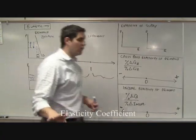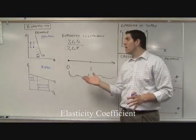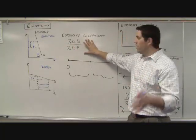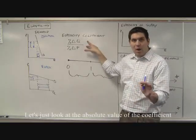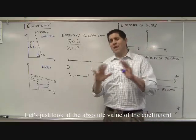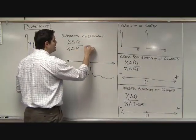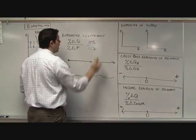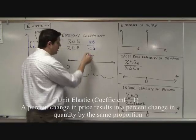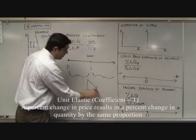Now there's this thing called the elasticity coefficient. It's the percent change in quantity divided by the percent change in price, and it pops out a number. That number tells you if a product's demand is elastic or inelastic. This will pop out a negative number because of the inverse relationship between quantity and price — just take the absolute value. If the change in price was 10% and that led to a 10% change in quantity, that pops out a one — that's called unit elastic, with a 45-degree angle demand curve.